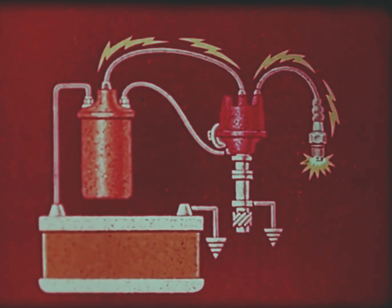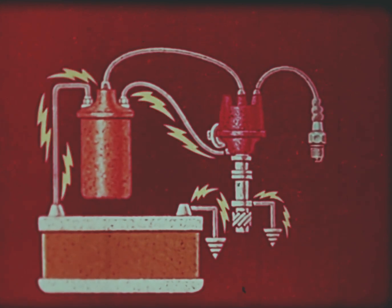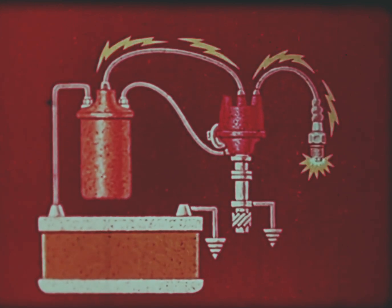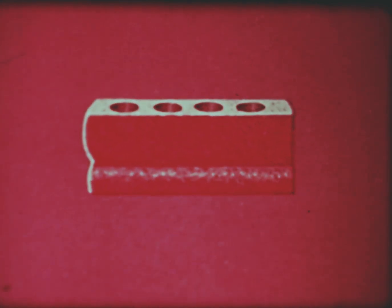But before I can be a practical engine, I need a few more parts. For one, a block. It's usually a large piece of cast iron with a cylinder formed by boring right through the block. Then there's my head. More like a cap, really, fastened on tight enough to keep me from blowing it off when the pressures inside go up. Underneath, a removable pan holds the oil I need for lubrication.